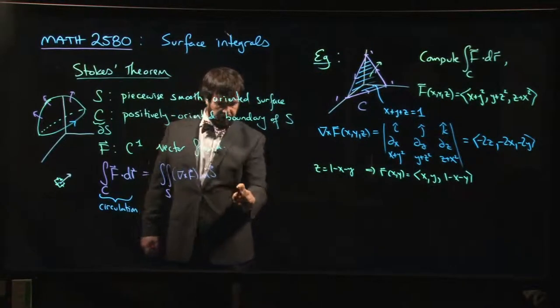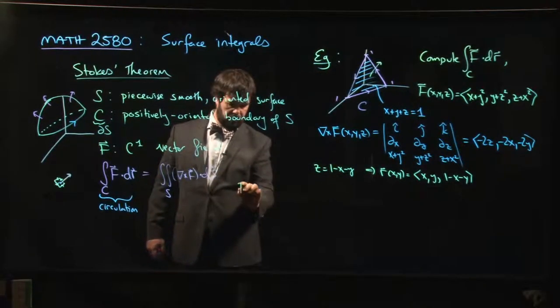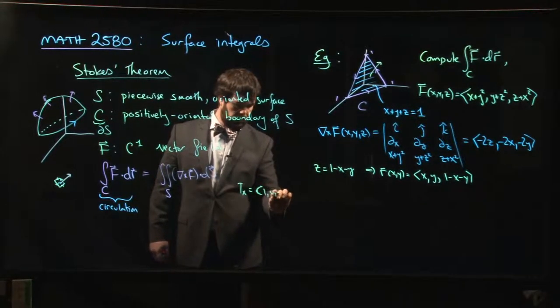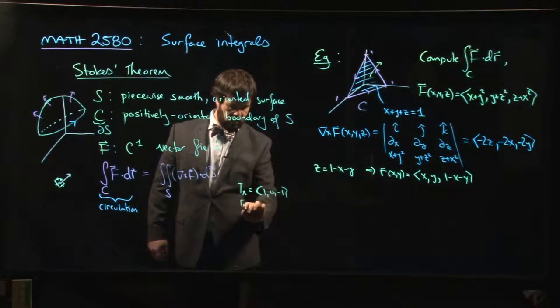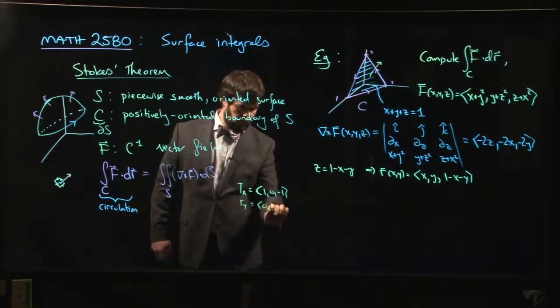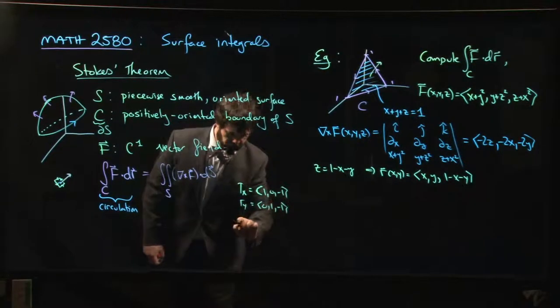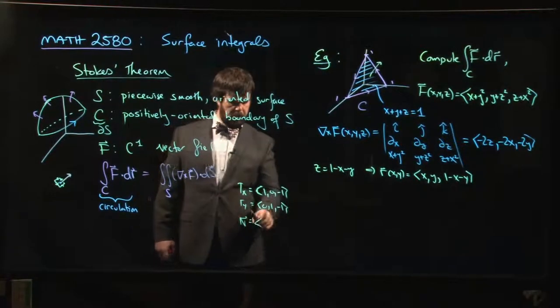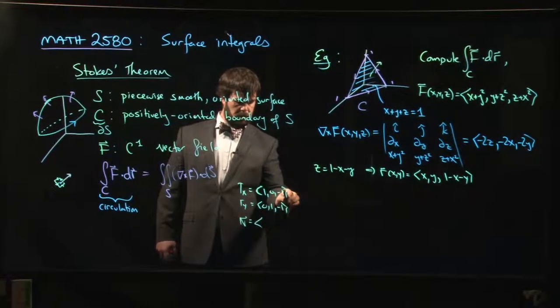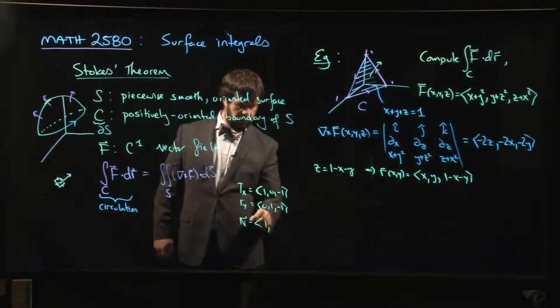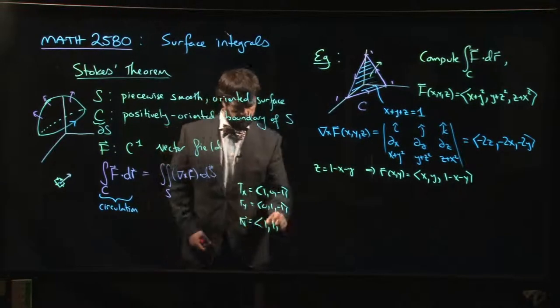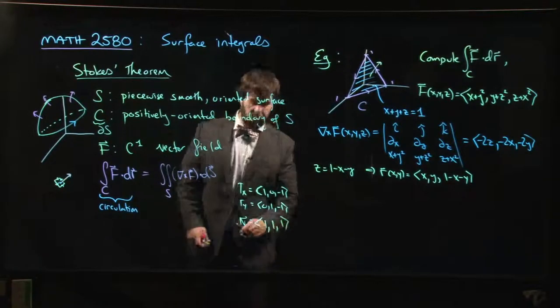So we kind of go off on the side and we're like, okay, let's see: the rx vector is going to be (1, 0, -1), the ry vector (0, 1, -1). So the normal vector is going to be... it's going to be 1, and 0, 1. Ah, it's the right one, okay, good.